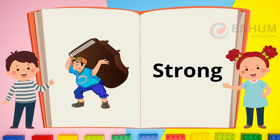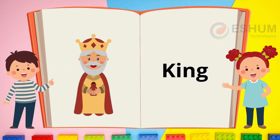Strong. The man in the picture lifts heavy things, but it doesn't look hard for him — he is strong. Are you strong? King. Look at the picture of the old man — he is a king. He has a crown on his head. Why do you think a king wears a crown?